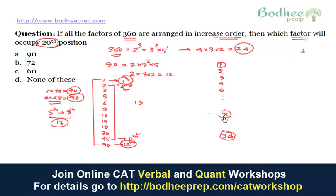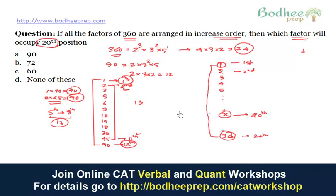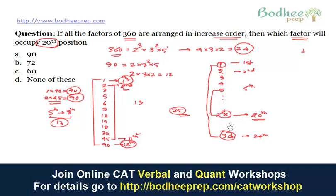We have to find the factor x at the 20th position. Since 360 is at the 24th position, the sum of paired position numbers here is 25. So the 1st pairs with the 24th, the 2nd pairs with the 23rd, and so on. The factor that pairs with the 20th position factor must be at position 5, because 20 + 5 = 25.